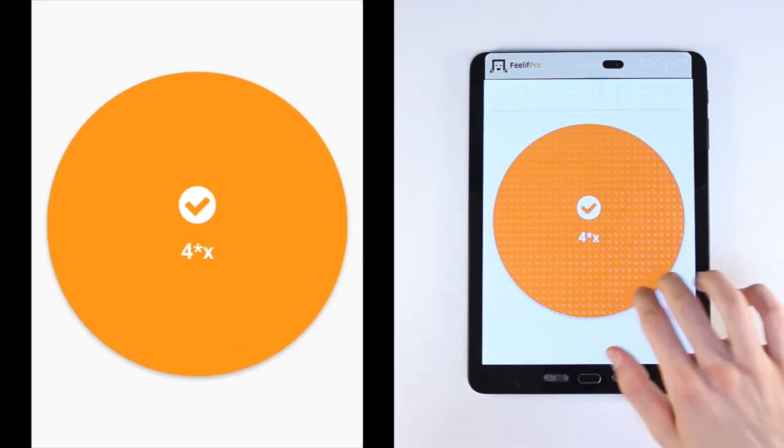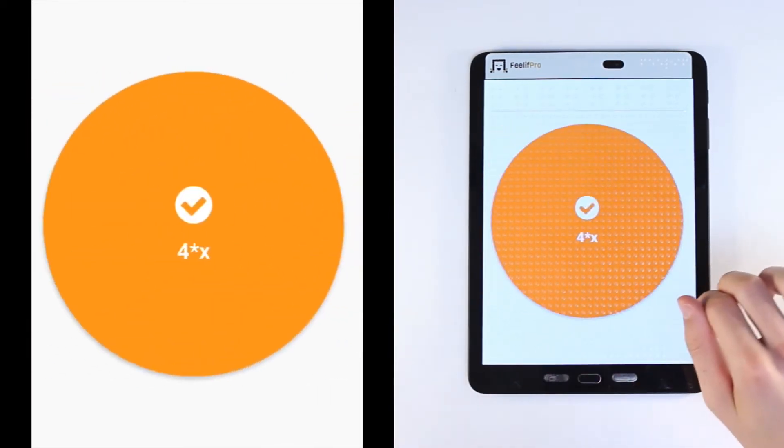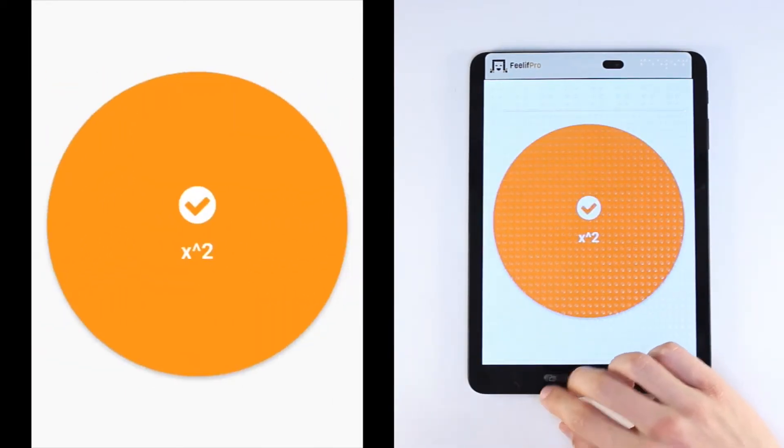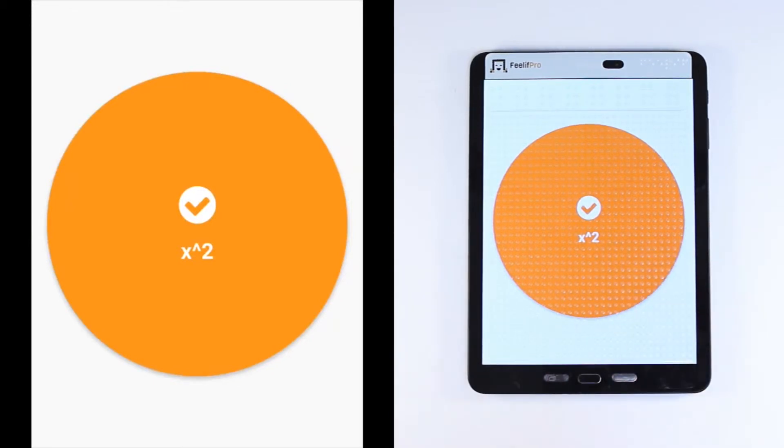When you enter the chapter, you will be presented with a list of most recent functions that were inserted and tested in the third chapter. Double tap on the function that you want to analyze.